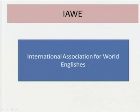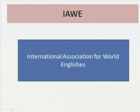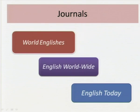There is also an international association that studies and conducts research conferences on world Englishes — it is called the IAWE, or the International Association for World Englishes. World Englishes is an area of study in its own right, and the IAWE also has journals. Three important journals are: 'World Englishes,' 'English Worldwide,' and 'English Today.' Those who are interested may look at articles in these three journals.